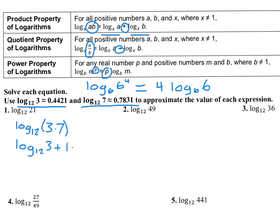So I can break that up using the product property. Log base 12 of 21 becomes log base 12 of 3 plus log base 12 of 7. We're given both of those values: 0.4421 and 0.7831. Adding those two numbers together gives 1.2252.